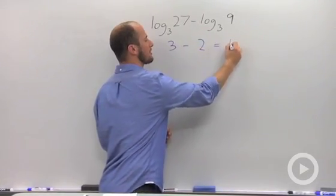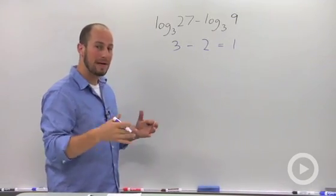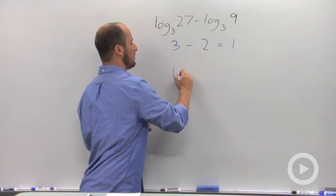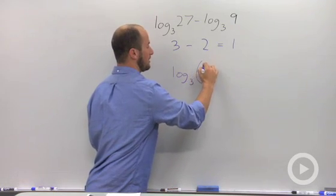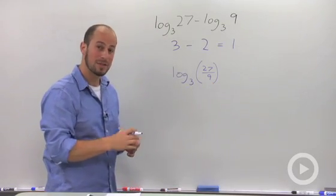We're subtracting in between, so this is just going to be 1. We can combine these actually, and how we do that is by division. So this turns out to be log base 3 of 27 over 9.